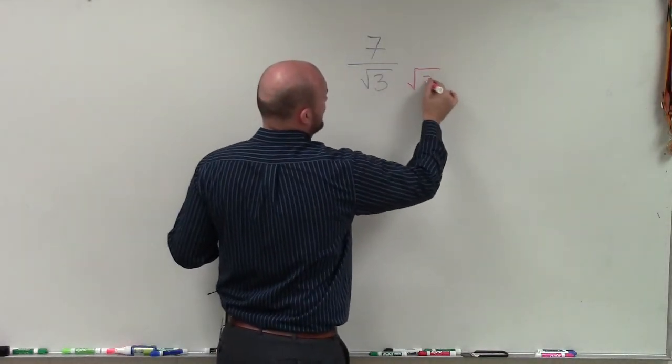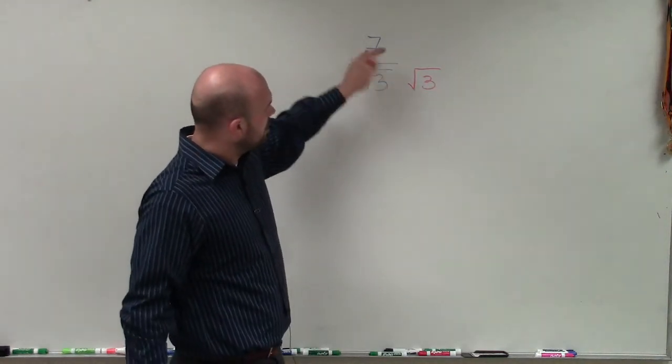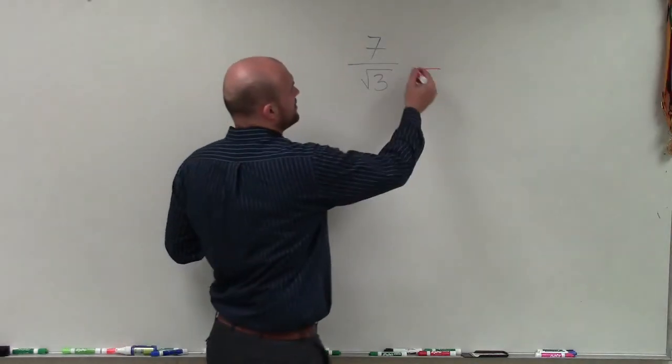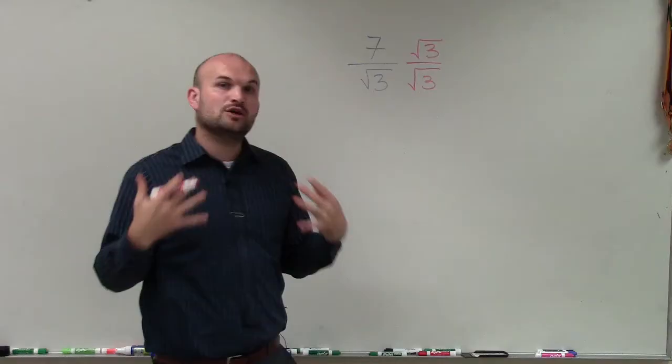And remember, it's very important when rationalizing the denominator that we understand that whenever we're multiplying something in a fraction, whatever we multiply on the top, we multiply in the denominator. The reason is to produce equivalent fractions.